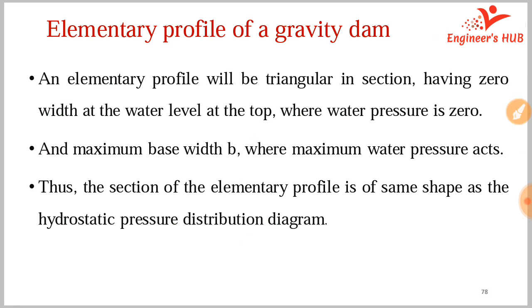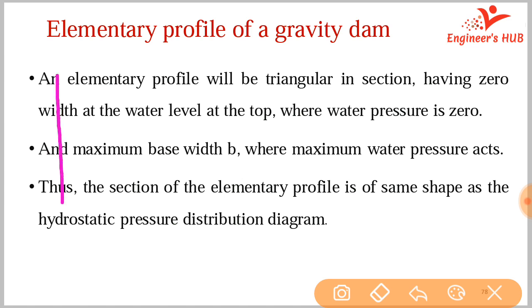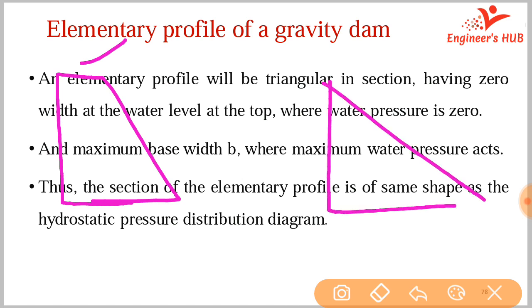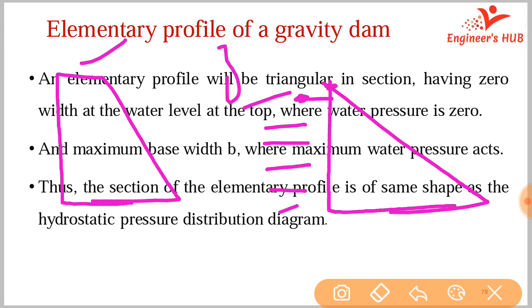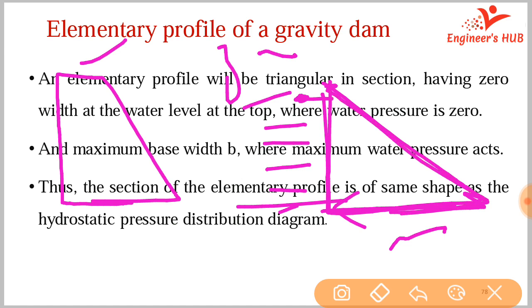So the elementary profile of a gravity dam is triangular in shape. At the top, the width is zero and water pressure force is zero. At the base, the width is maximum and water pressure force is maximum. This is the same as the hydrostatic pressure distribution diagram — this is the elementary profile of the gravity dam.